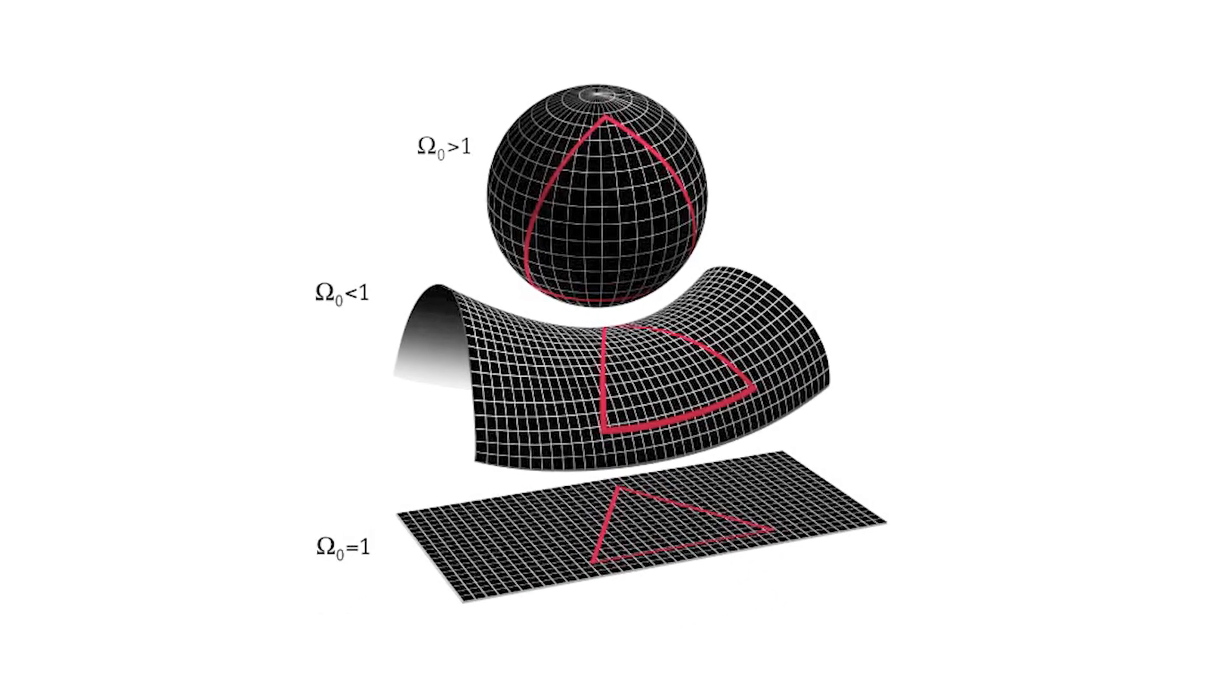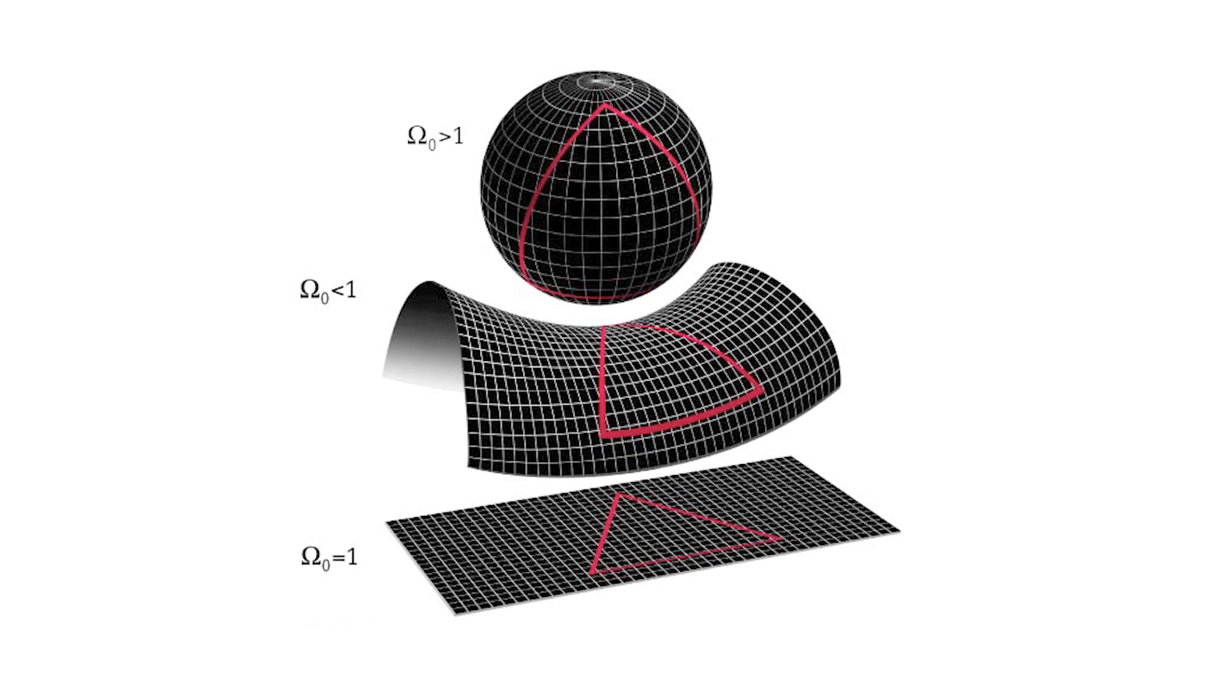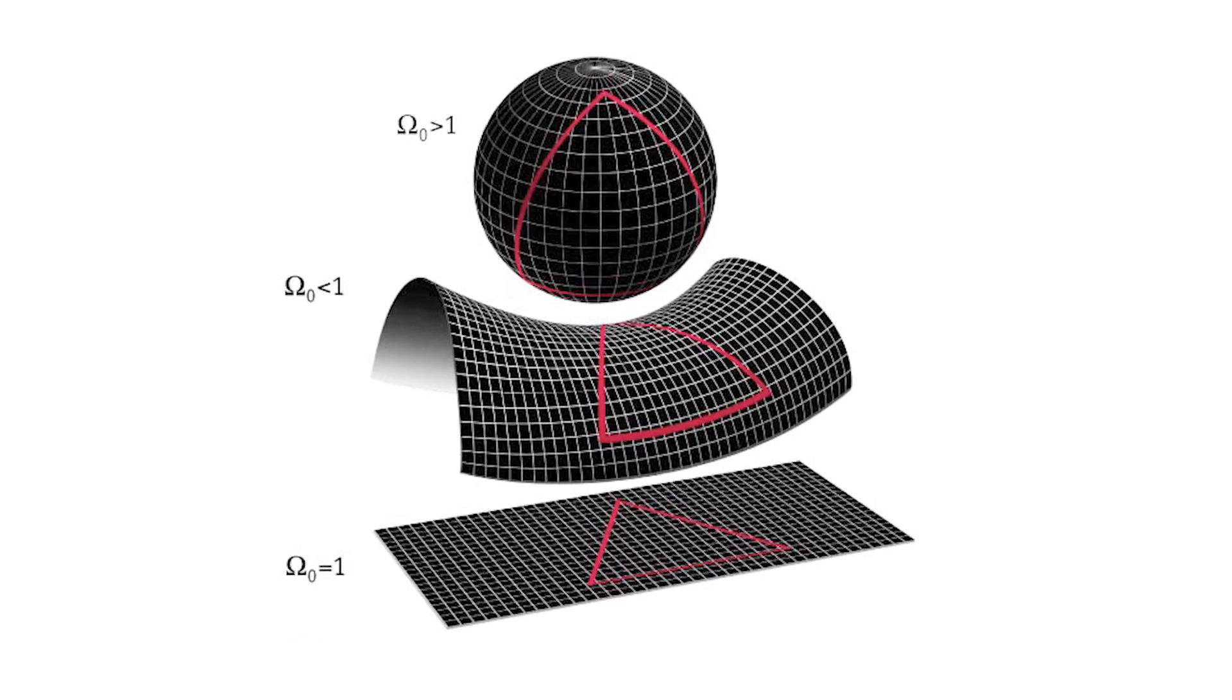The second special feature of the Big Bang, which is very difficult to imagine arising from a standard explosion, is a remarkable coincidence called the flatness problem.